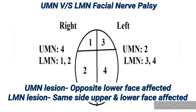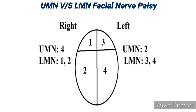In this picture, the face is divided into four quadrants: right upper, right lower, left upper, and left lower. If the child has a right-sided upper motor neuron lesion, the left lower face will be affected. If the child has a right-sided lower motor neuron lesion, the entire right side of the face will be affected. In left upper motor neuron lesion, the right lower part of the face is affected. In left lower motor neuron lesion, the entire left ipsilateral side of the face is affected.